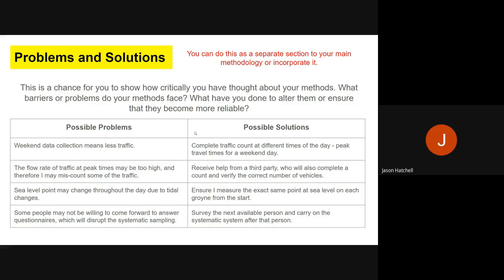Another possible problem with a traffic count is you might miscount the amount of traffic gone by. A possible solution is you might have another person with you, a third party, and get them to count at the same time, then compare the final numbers you both come to.